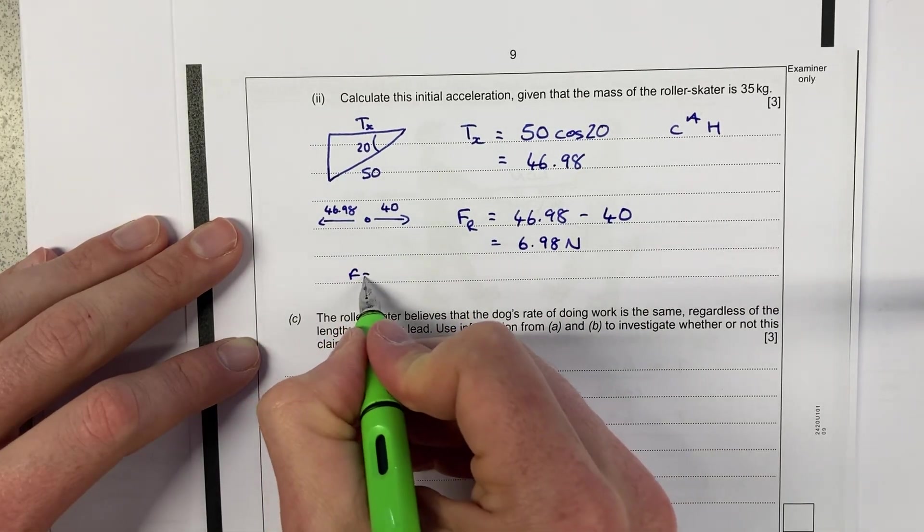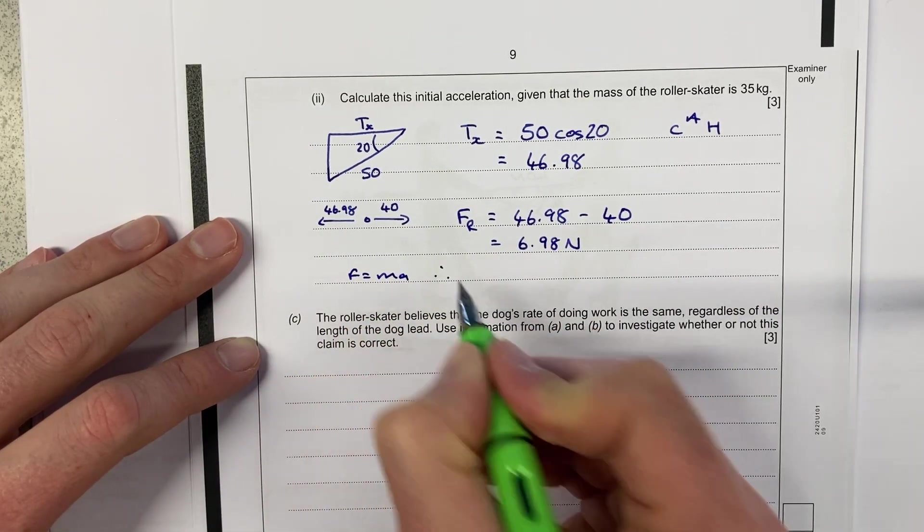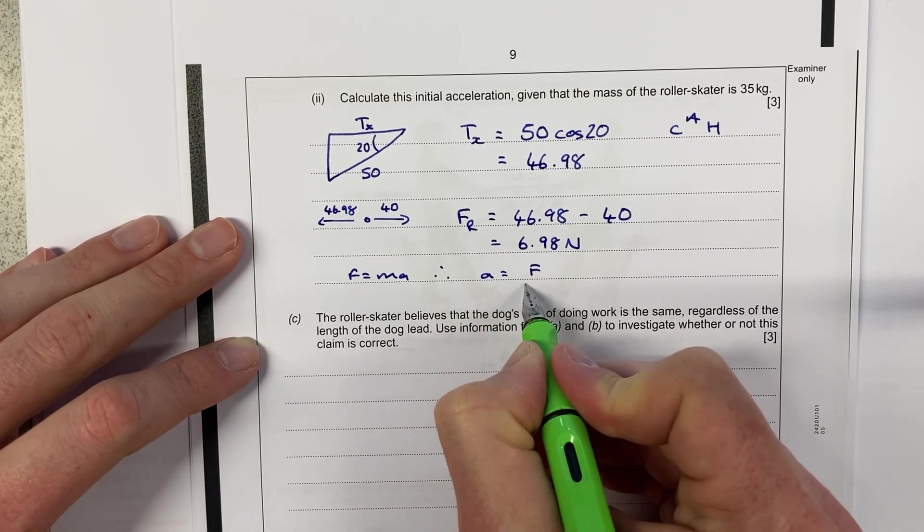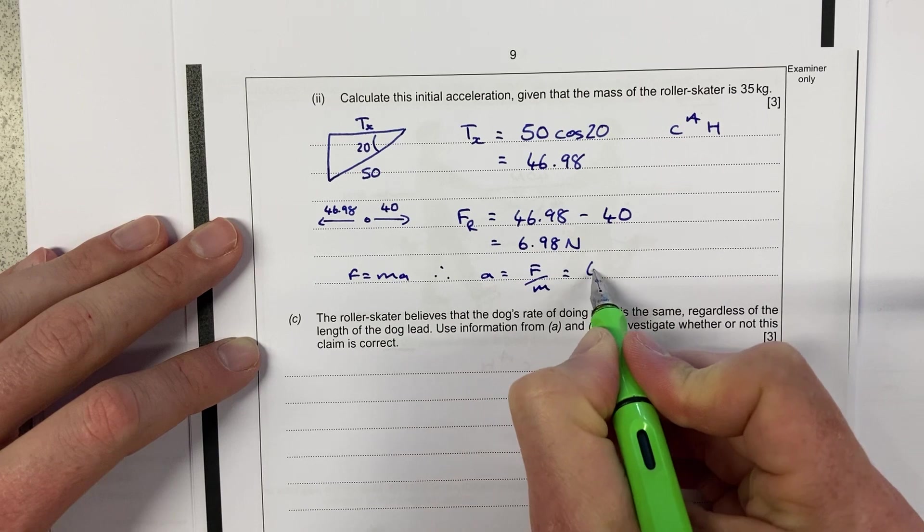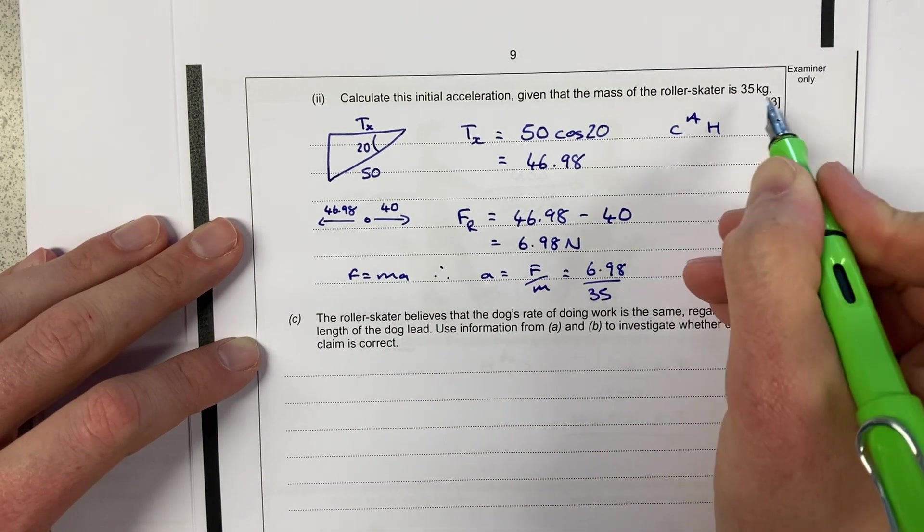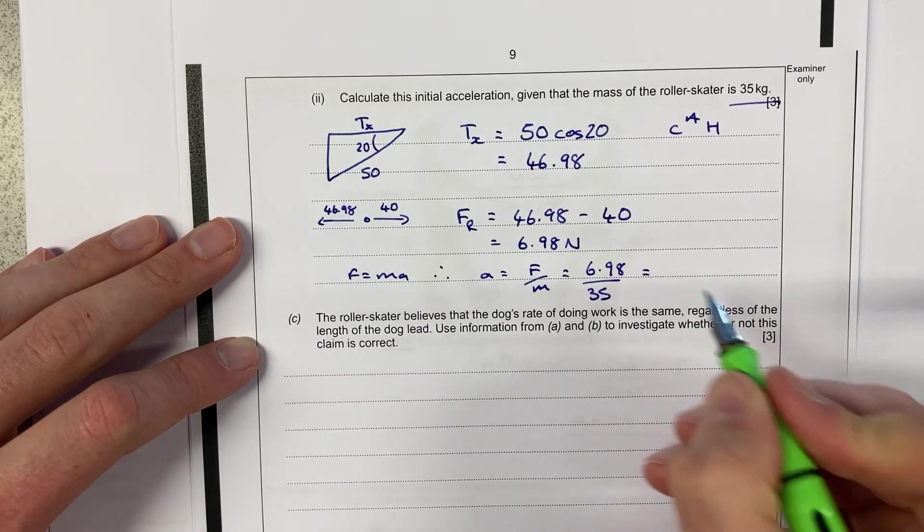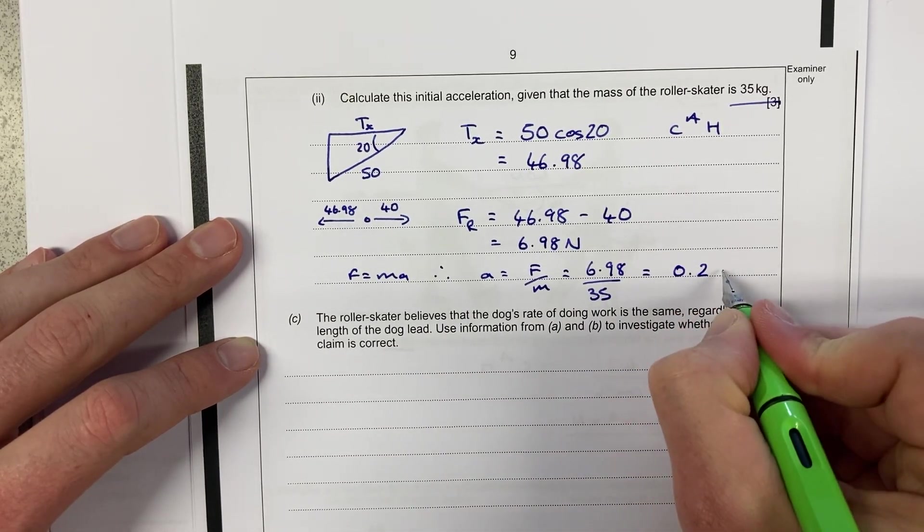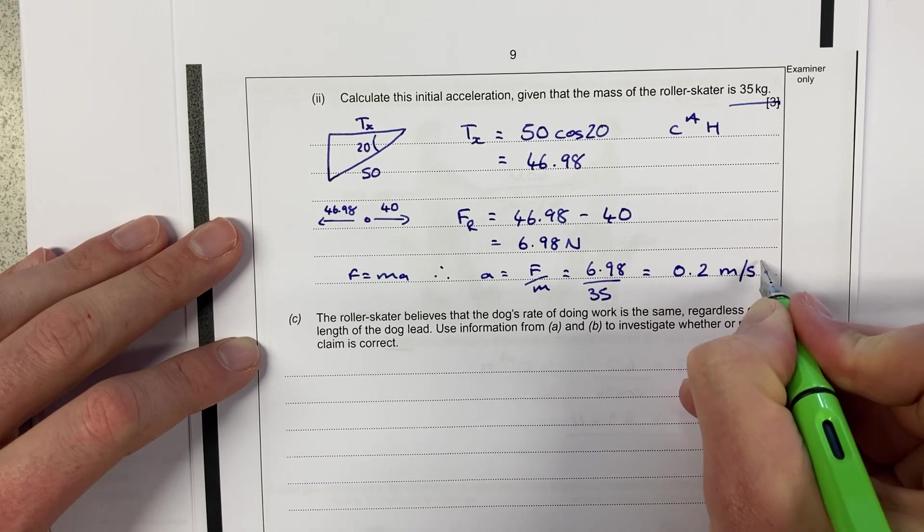I'm then going to do F equals MA, or rather I'm going to rearrange it so that I've got A equals F over M. It's going to be 6.98 divided by 35 from the question, and that equals 0.2 metres per second squared.